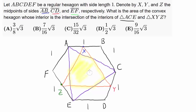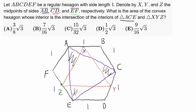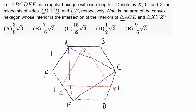We wish to find the area of this hexagon inside. One way is to find the area of one of the equilateral triangles — say ACE — then take away the areas of the three smaller triangles from that area. That should give us the area of this hexagon. So should we start with triangle XYZ or ACE?